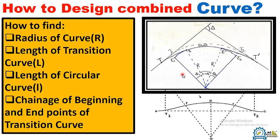Hello, I am here with a new topic related to curves: how to design a combined curve. A combined curve is, as obvious from the name, a combination of two types of curves — a simple circular curve and a transition curve. In this video we will find how to calculate the radius of the curve, the length of the transition curve, the length of the circular curve, and the chainage of the beginning and end points of the transition curve.